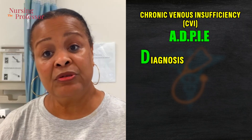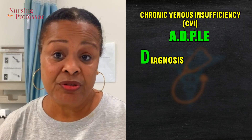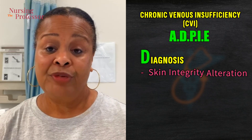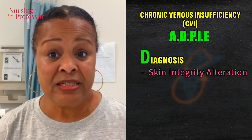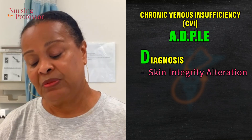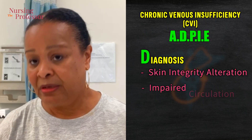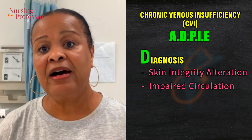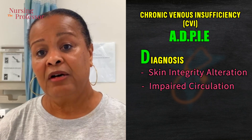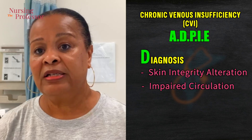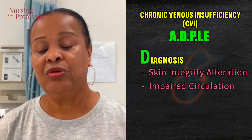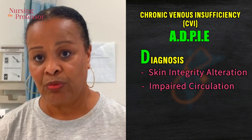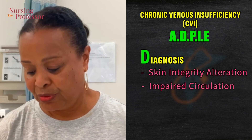Then we come up with a nursing diagnosis, which could be alteration in skin integrity if there's some skin breakdown. It's definitely impaired circulation, because the valves of the veins are not working well enough to return all of that fluid back to the heart the way it's supposed to.